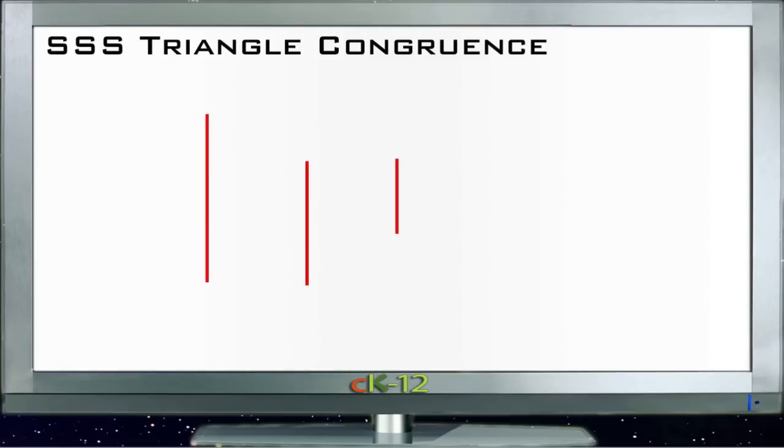And if I were to build a triangle out of those three sides, I can only build one specific triangle out of those three sides. There's only one way to get those three things to match that actually makes a triangle.